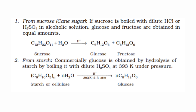Starch is the monomer source of glucose. Commercially, glucose is obtained by hydrolysis of starch by boiling with dilute H2SO4 at a temperature of 393 Kelvin under pressure.